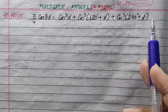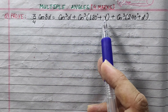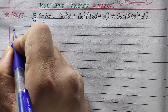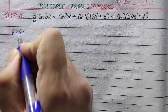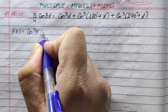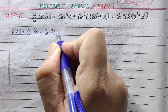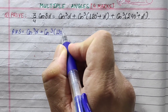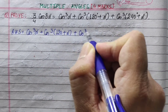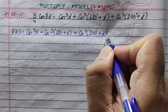Obviously, RHS is known as LHS. Now let's start with RHS. So RHS equals cos³α plus cos³(120 plus α) plus cos³(240 plus α).